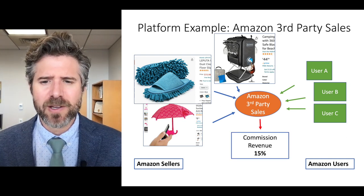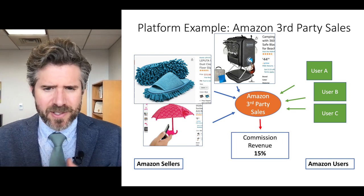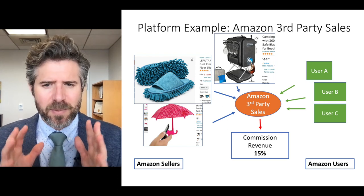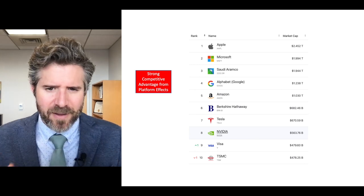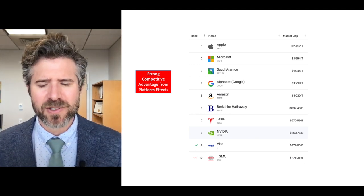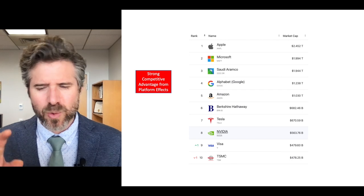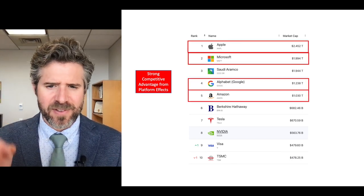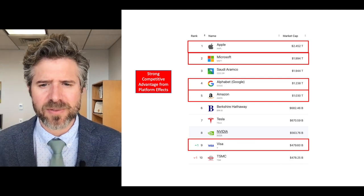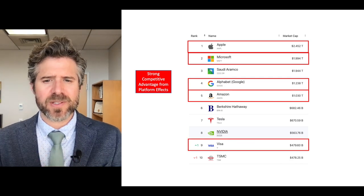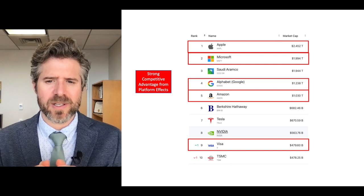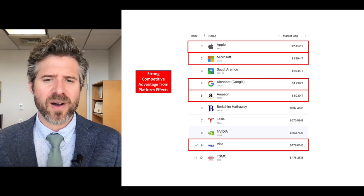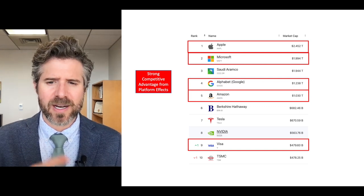If we think about why platforms are interesting, it's because the most profitable companies in the world — or companies with the highest market capitalization — Apple, Microsoft, Google, Amazon, and Visa, which I'll get to in a few minutes — all benefit strongly. Some of their strongest competitive advantages are often created from two-sided markets.